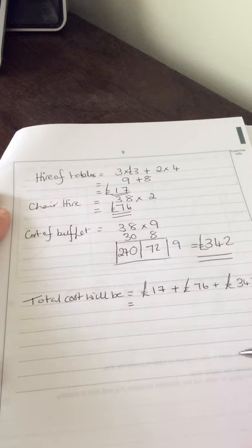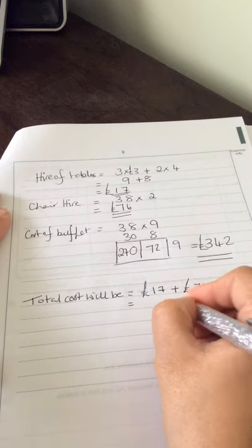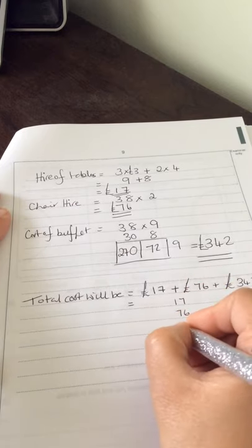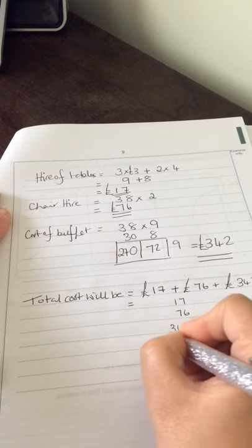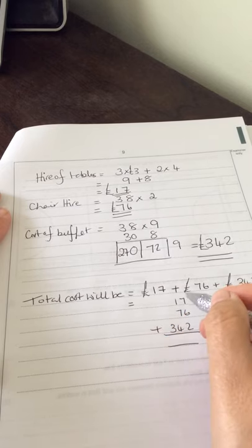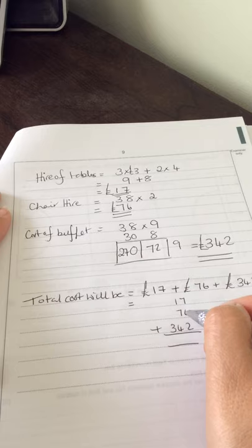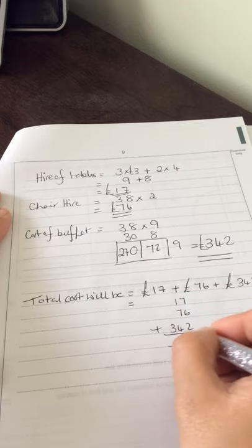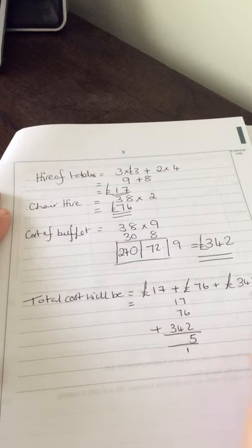The last thing we need to do is add them up. Now we can just use the column method. Seven plus six is thirteen, plus the two is fifteen, five down, carry the one.